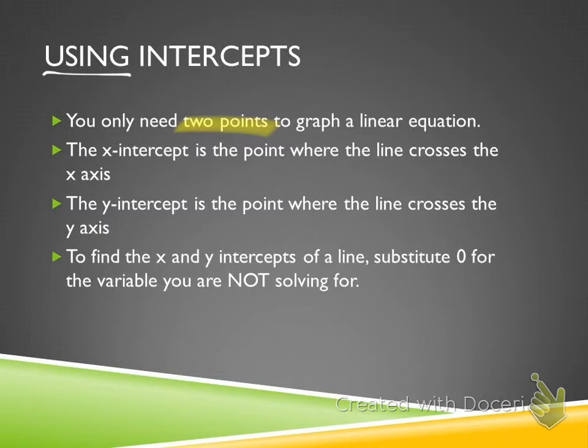The second point you need to understand is: the x-intercept is the point where the line crosses which axis? The x-axis. So if the line crosses the x-axis on an x-value of four, the x-intercept is four.